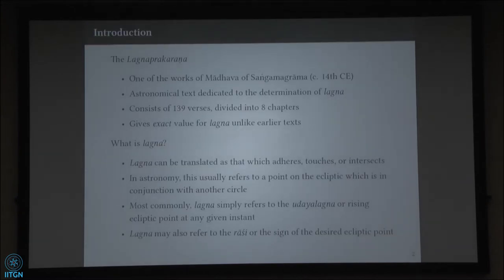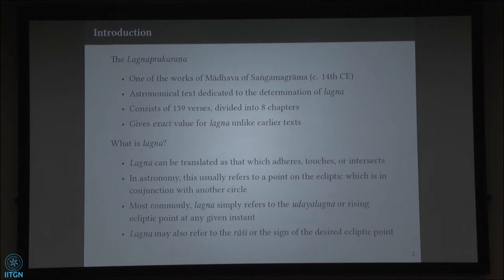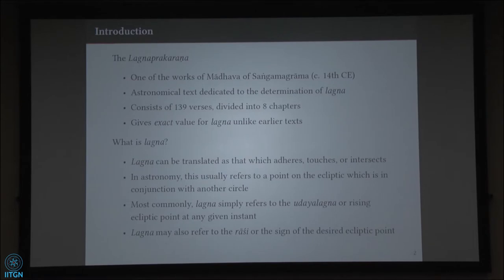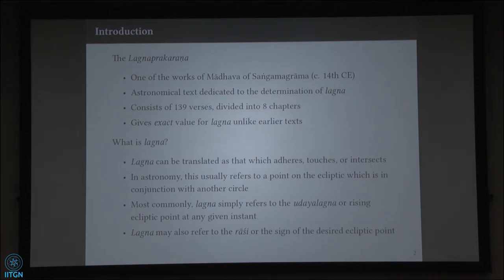We are talking about a text called the Lagnaprakarna, one of the works of Madhava of Sangamagarama. It is an astronomical text dedicated to the determination of the Lagnaprakarna. It consists of 139 verses divided into 8 chapters, and unlike earlier texts which only give approximate values, this text gives the exact value for Lagnaprakarna.